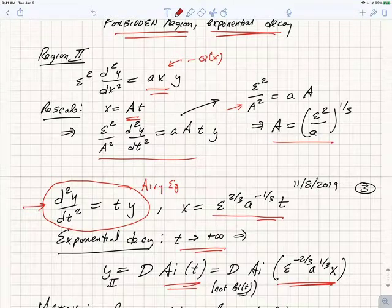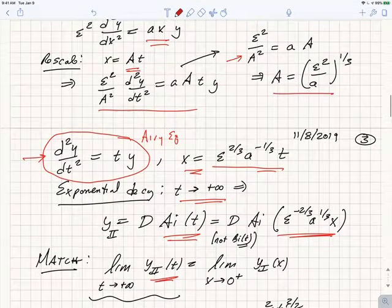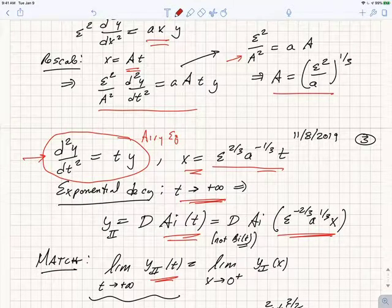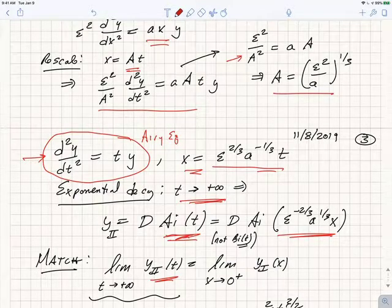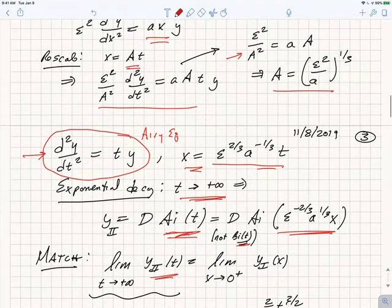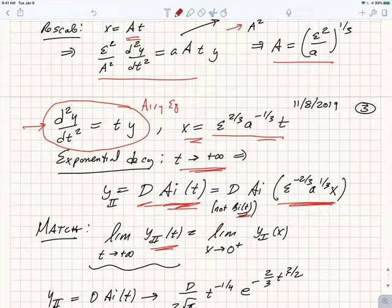This scaling tells us the relationship between x and t. We're interested in the solution that exponentially decays at large t. Of the two independent solutions of the Airy equation, Ai(t) and Bi(t), Ai(t) is specifically the solution that goes to zero exponentially as the argument goes to positive infinity, while Bi(t) is the one that grows exponentially. So physically, in region two the solution we need is some constant times Ai(t), written in terms of x.